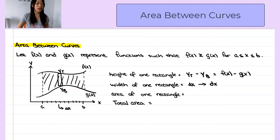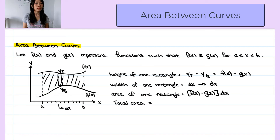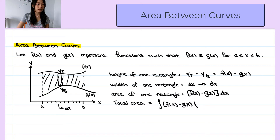The area of any rectangle is the base times the height. So the area of this rectangle is f of x minus g of x — which is the height — times its width, dx. So the total area that we want to find is the integral of f of x minus g of x, dx, evaluated from a to b.